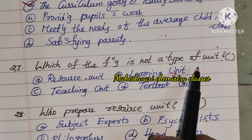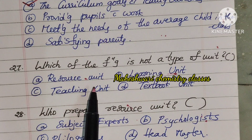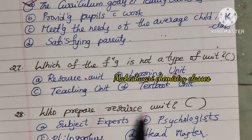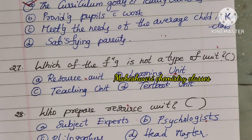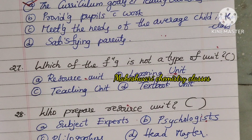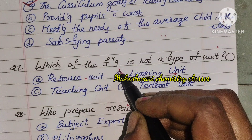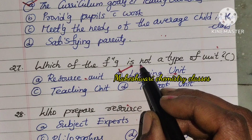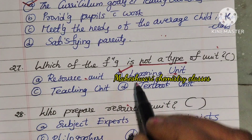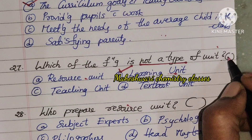Twenty-seventh question: Which of the following is not a type of unit — Resource unit, Learning unit, Teaching unit, or Textbook unit? Learning unit is not a standard type of unit. We consider the Teaching unit and Textbook unit. Option B is right. So 27 is B.